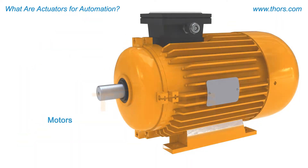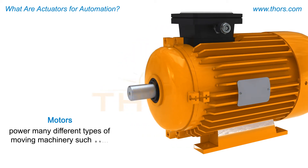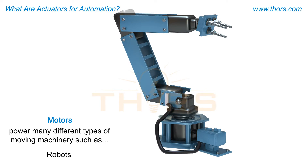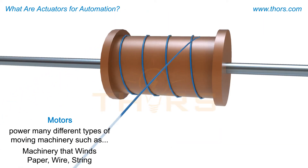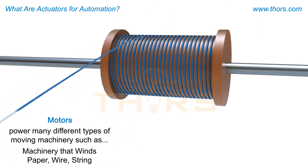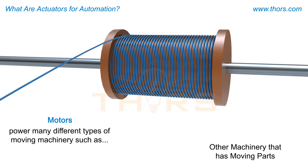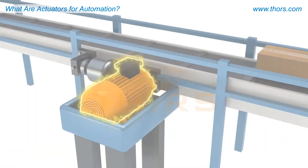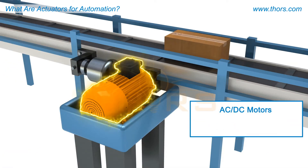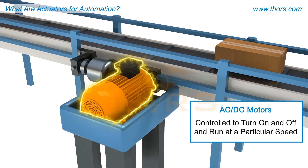Motors are actuators that power many different types of moving machinery, such as conveyor belts, cranes and hoists, robots, machinery that winds paper, wire, string, and material onto spools, and an array of other types of machinery that have moving parts. Some motors, such as AC and DC motors, are controlled to turn off or turn on and run at a particular speed.